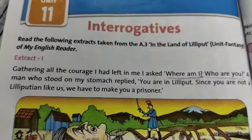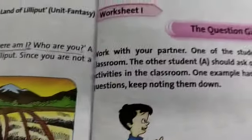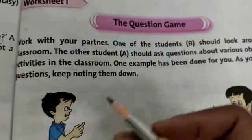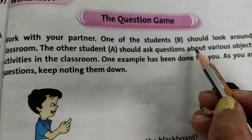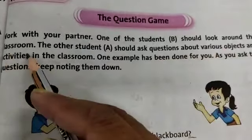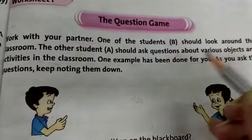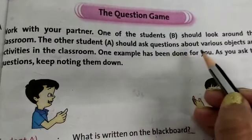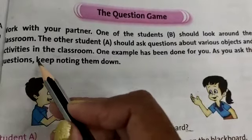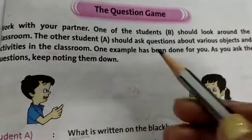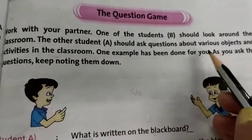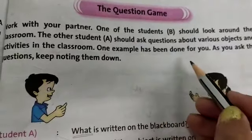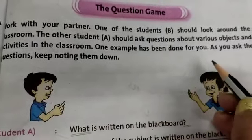Now I will take Worksheet 1. It's a question game — work with your partner. One student should look around the classroom, and Student A should ask questions about various objects and activities in the classroom. One example has been done for you.